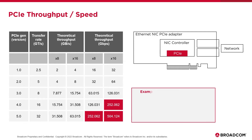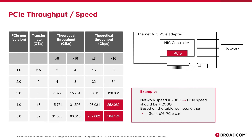In the bottom right, we give you an example of a Broadcom 200 gig NIC and its requirements. In order for that NIC to perform to its potential, it would require 16 lanes at Gen 4. However, it could accomplish the same level of performance with only 8 lanes if it were at Gen 5.